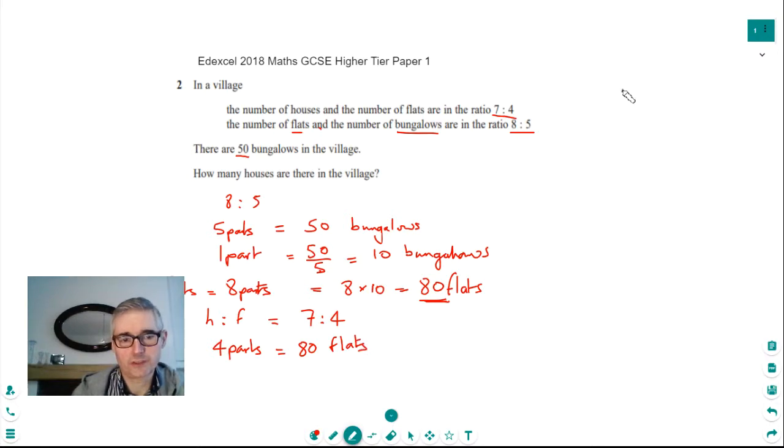And the standard thing to do in this is then automatically find out what one part is worth. So we can say one part is then going to be equal to 80 divided by 4, treating it like an equation and dividing both sides by 4, which is 20 flats.